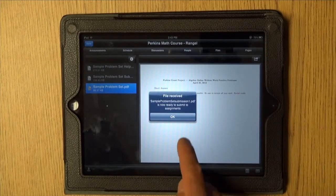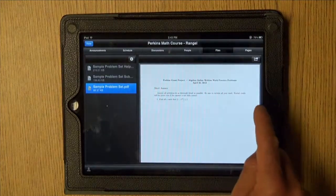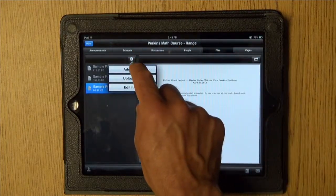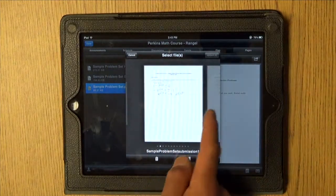Canvas tells them that the file's been received and is now ready to submit, which they have to do. So, they hit the gear box here to add that file. And it will show up here to the right. There it is.